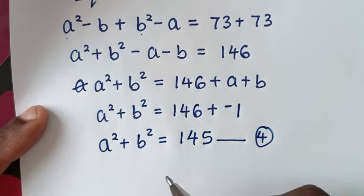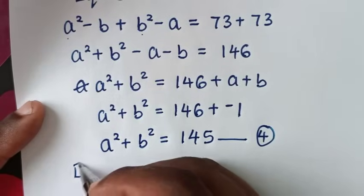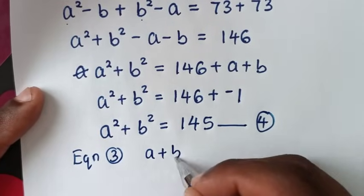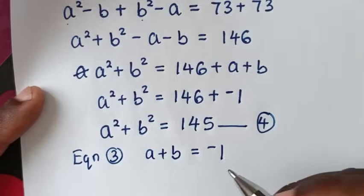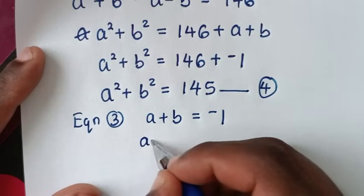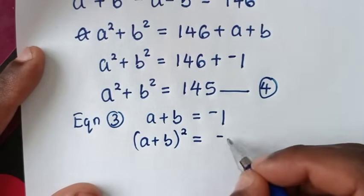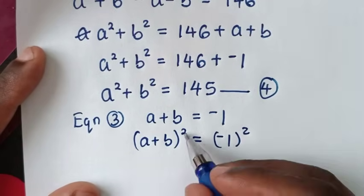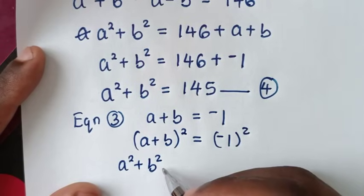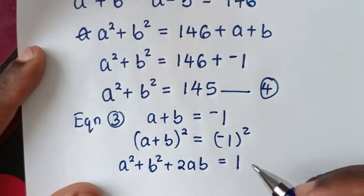In the next step, from equation 3, a plus b equals negative 1, we'll square both sides. So (a plus b) squared equals a squared plus b squared plus 2ab equals negative 1 squared, which is 1.